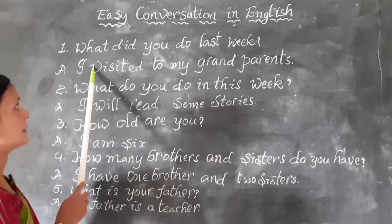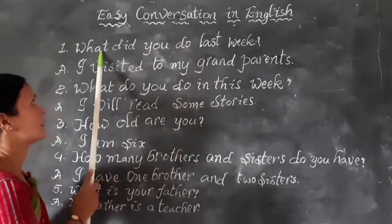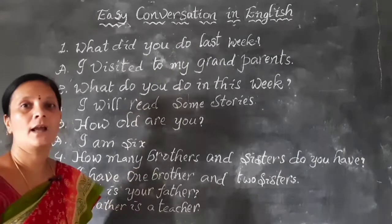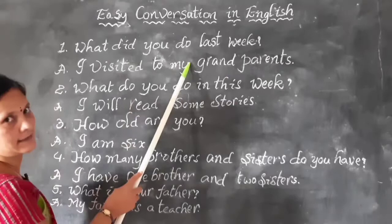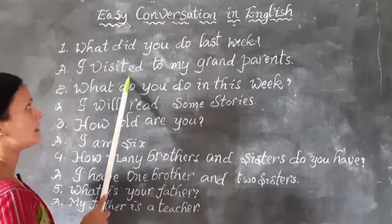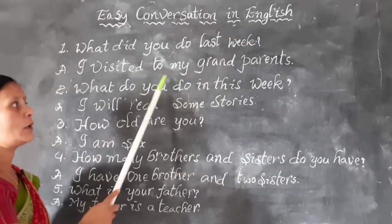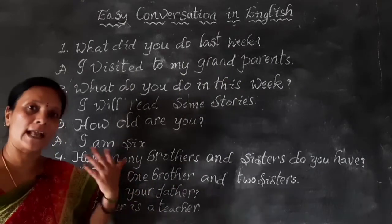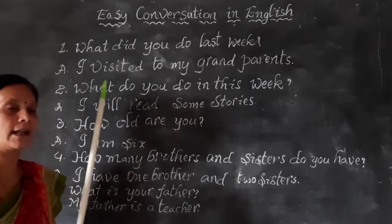The first one is: What did you do last week? This question is in past tense, so you answer in past tense also. For example: I visited my grandparents. That means you went to your grandparents' house or met with your grandparents.